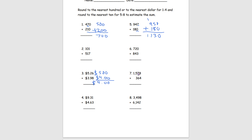Looking at number 7, we're doing the same thing — rounding to the nearest ten. We look at the digit 8 and since 8 rounds up, this number becomes 1,580. Looking at the next number, the digit 4 rounds down, so we get 360. Adding these two together: 0 plus 0 is 0, 8 plus 6 is 14 so bring the 4 down and carry the 1, 5 plus 3 is 8 plus 1 is 9, and bring the 1 down. We get 1,940.